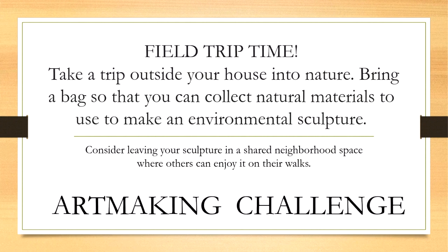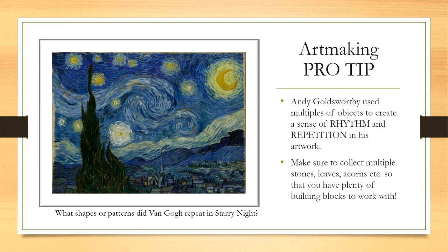Here's your art-making pro tip for the day. Andy Goldsworthy used multiples of the objects in his sculptures — he didn't just collect one rock. You might collect 10 or 20 rocks that are relatively the same size or shape. As you're collecting materials, consider collecting multiples of each. This allows you to create a sense of rhythm and repetition in your artwork.